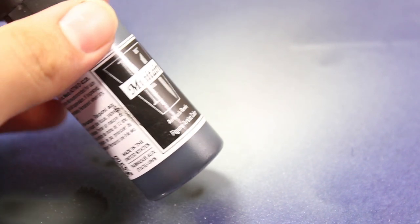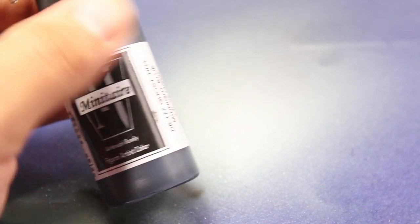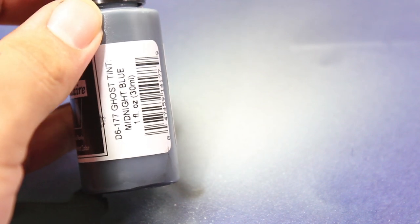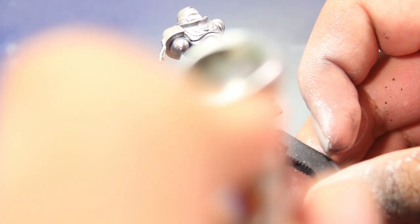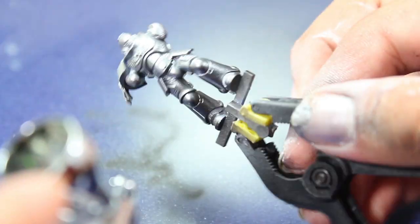Once I had the model painted silver, I went in with some Badger Ghost Tint Midnight Blue, which is a black tint. I used that to further help my pre-shading so that the under areas were very much darker than the lighter areas.